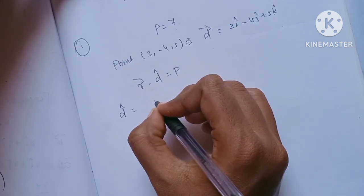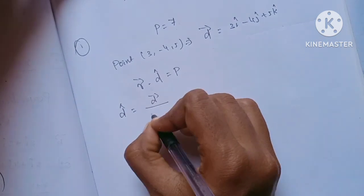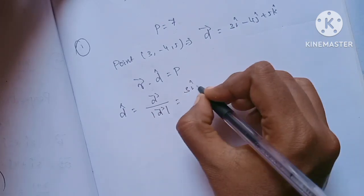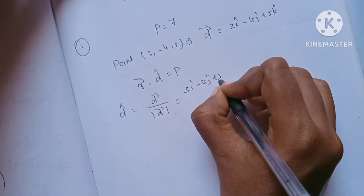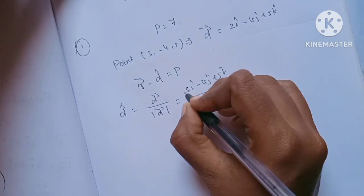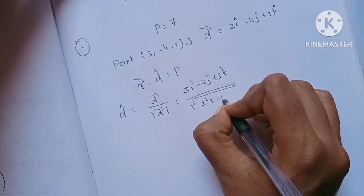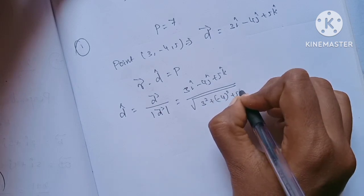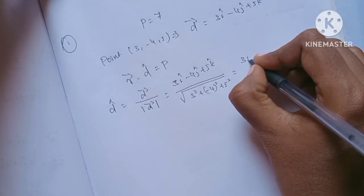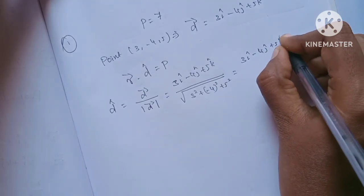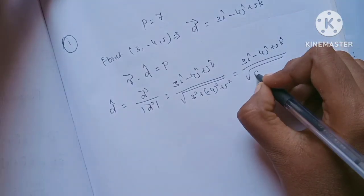d cap is D vector divided by the modulus of D vector. D vector is 3i - 4j + 5k. The modulus of D is the square root of 3 squared plus 4 squared plus 5 squared. That's the square root of 9...